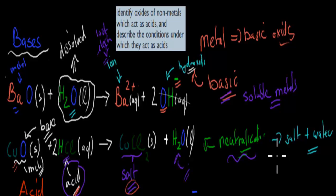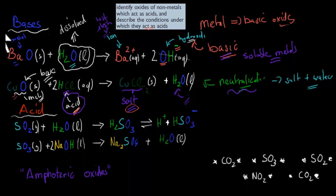Now this dot point asks us to describe the conditions under which nonmetals act as acidic oxides. Nonmetals are mostly gases, such as oxygen, sulfur, nitrogen, or those kinds of compounds.